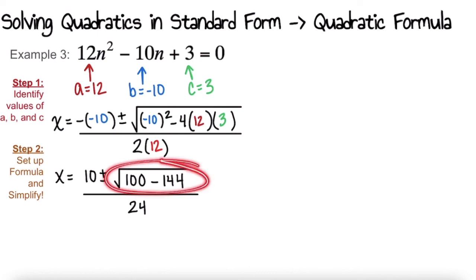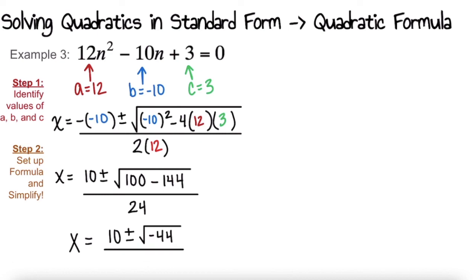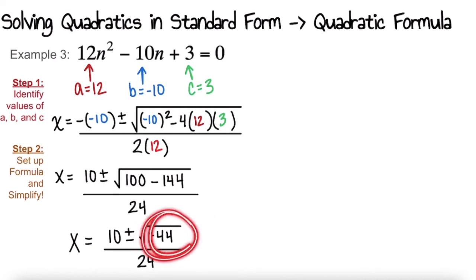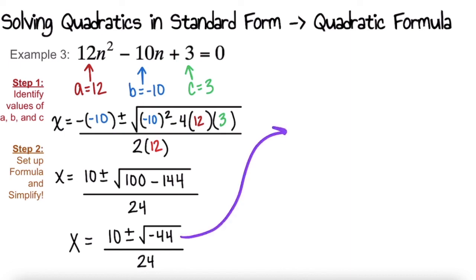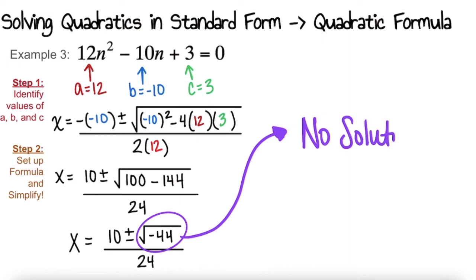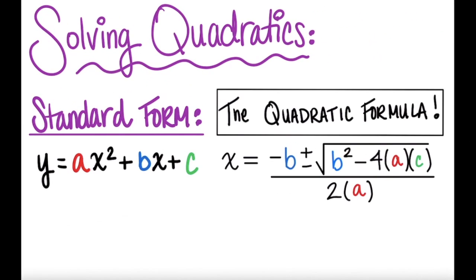Continuing to simplify under the square root: 100 minus 144 is negative 44, all divided by 24. Now, can we take the square root of negative 44? Not in Algebra 1 — later in Algebra 2 you'll learn more about that. Since we cannot take the square root of a negative number, this quadratic has no real solutions, meaning this parabola does not cross the x-axis at all. That means our work for this one is done. And that's it for today's lesson — I'll see you next time!